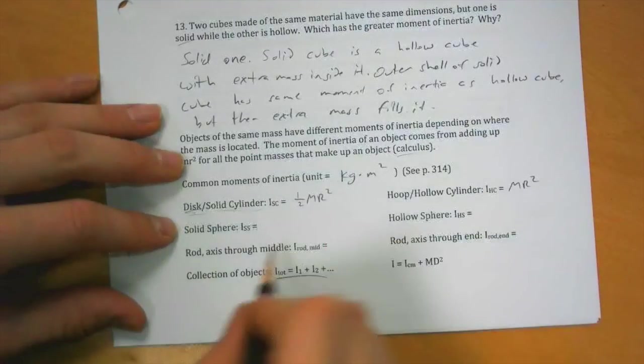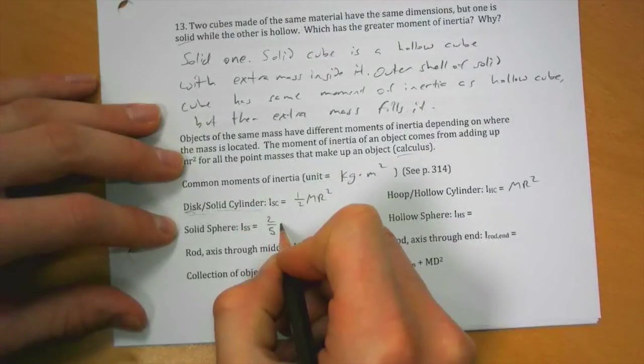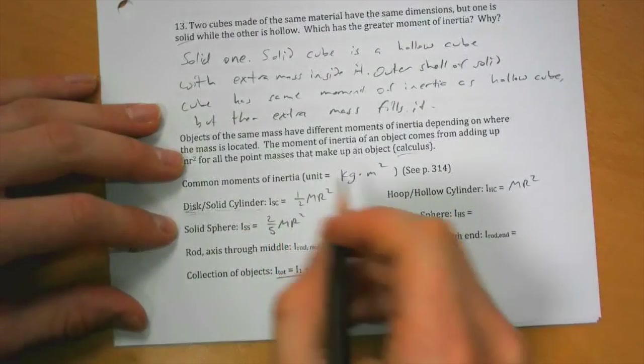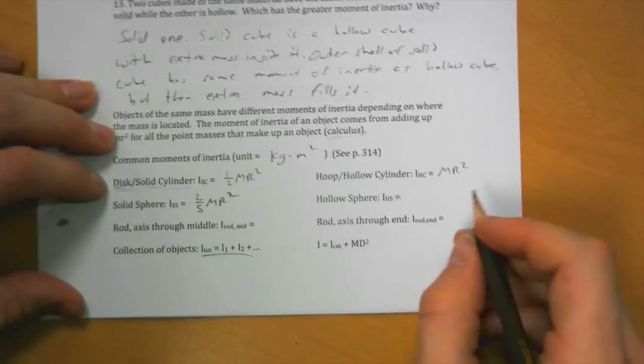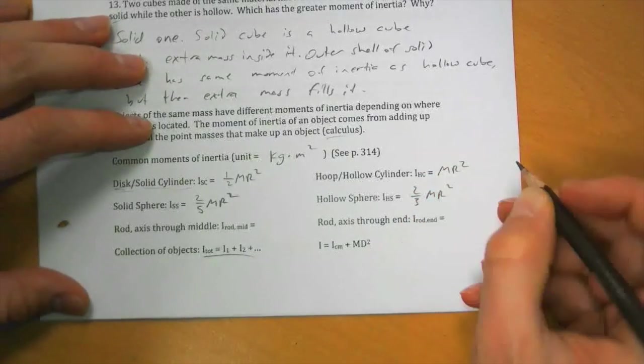A solid sphere is two-fifths mass times the radius of the sphere squared. If that sphere is hollow, that's two-thirds MR squared.